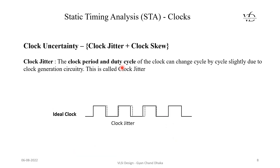Now let's see another important property of the clock: clock uncertainty. Clock uncertainty is a combination of two properties — clock jitter and clock skew. Note that clock slew and clock skew are two different properties of a clock signal; please don't get confused. Let's first look at clock jitter.